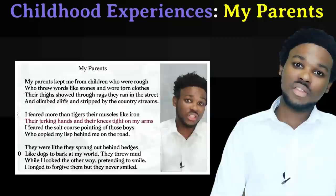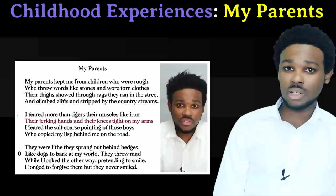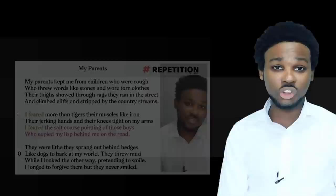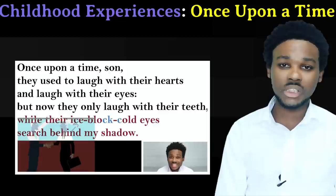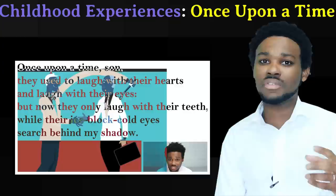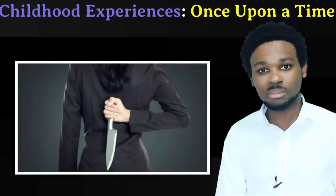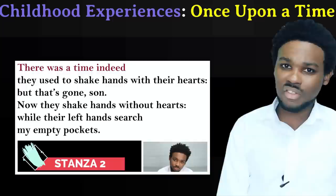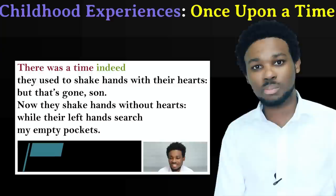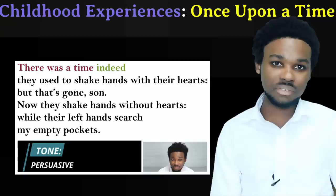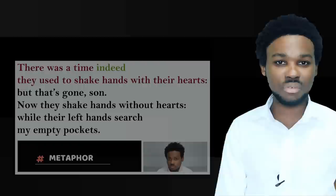My Parents is another poem built on the theme of childhood experiences. We see that the speaker resents his parents for having kept him away from the other children. He wishes he could have enjoyed a more liberal, more exciting childhood, but because his parents are overprotective or snobby, he ended up isolated from the other children. In Once Upon a Time, the speaker is talking to his son and wants to learn how to live with the same childlike honesty that his son has. The father might also be remembering his own childhood, when he himself was too naive to realize the true state of the world.